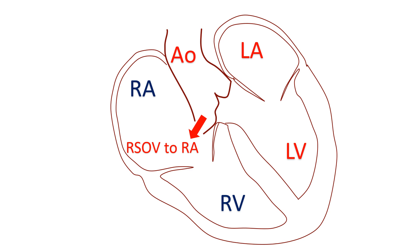The classical finding in RSOV to right ventricle is a continuous murmur with diastolic augmentation. The aneurysm track through the right ventricular wall gets compressed during systole and flow is better in diastole, causing the diastolic augmentation of the murmur. Rupture into the left ventricle will cause only a diastolic murmur.